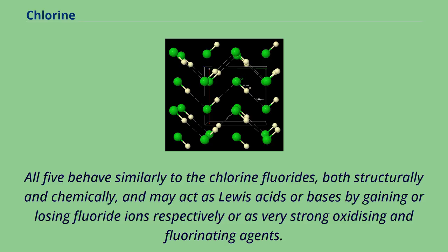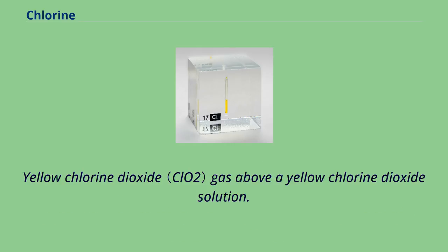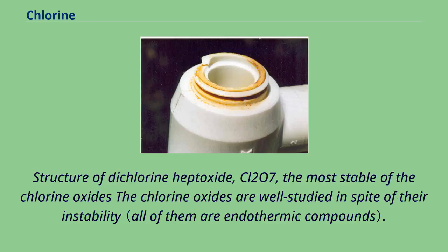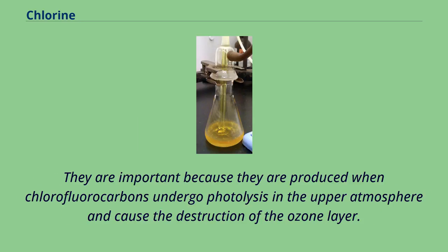Yellow chlorine dioxide gas above a yellow chlorine dioxide solution; solutions of pure chlorine dioxide are dark green, while this solution is yellow due to impurities produced from its photodecomposition. Dichlorine heptoxide, Cl₂O₇, is the most stable of the chlorine oxides. The chlorine oxides are well studied in spite of their instability; they are important because they are produced when chlorofluorocarbons undergo photolysis in the upper atmosphere and cause the destruction of the ozone layer. None of them can be made from directly reacting the elements.